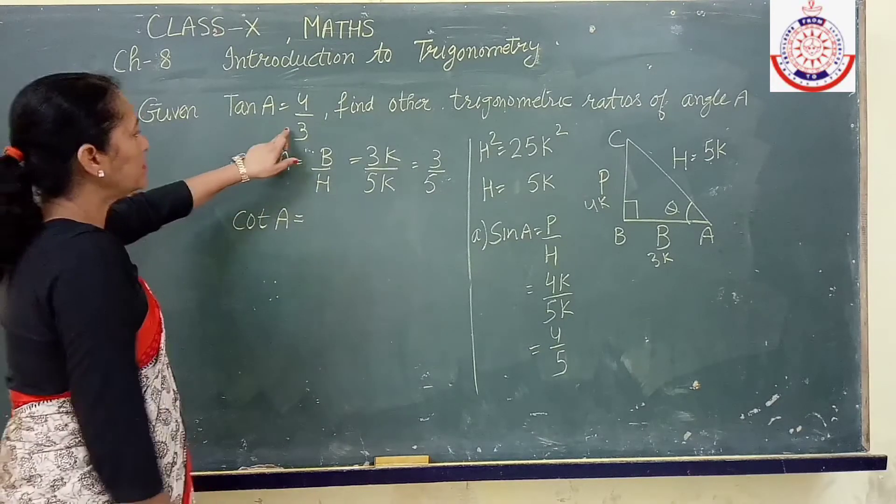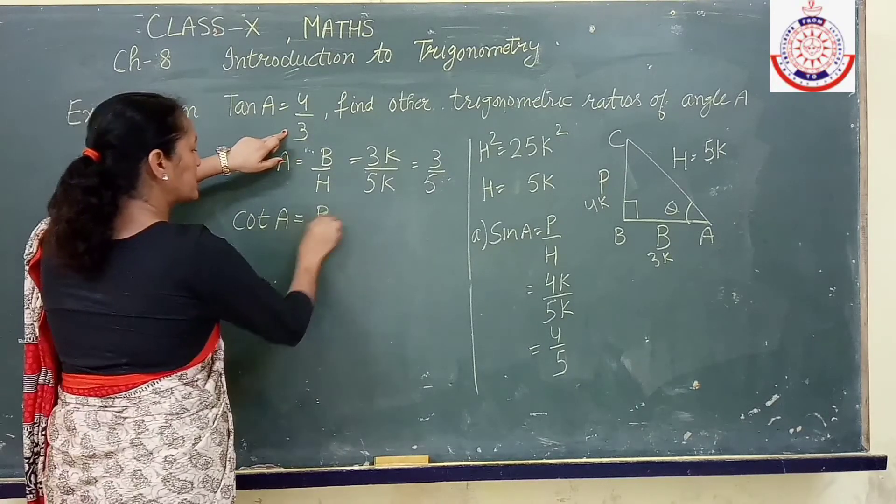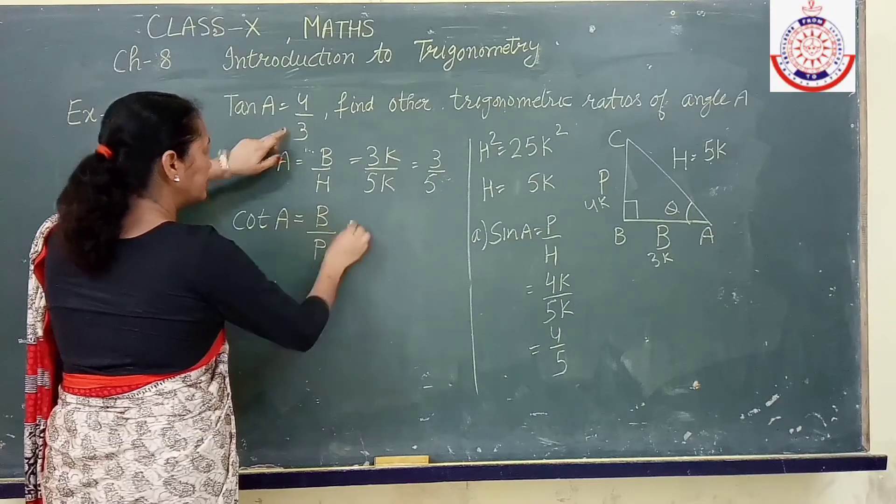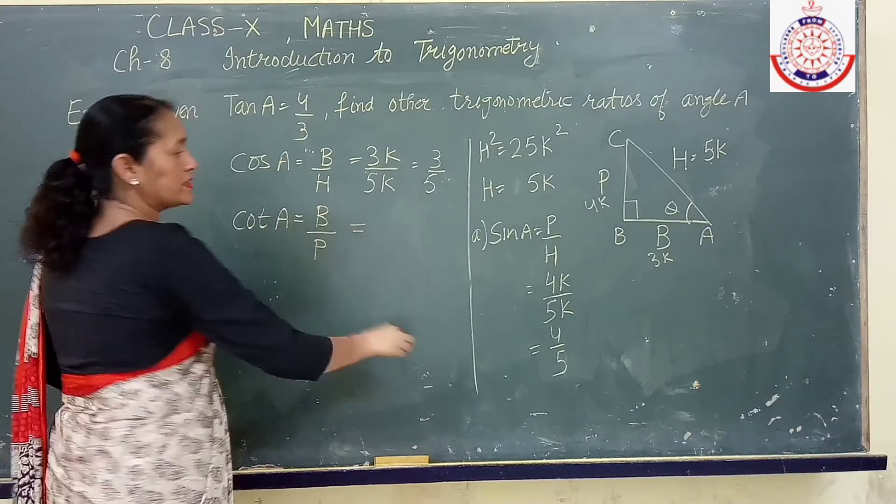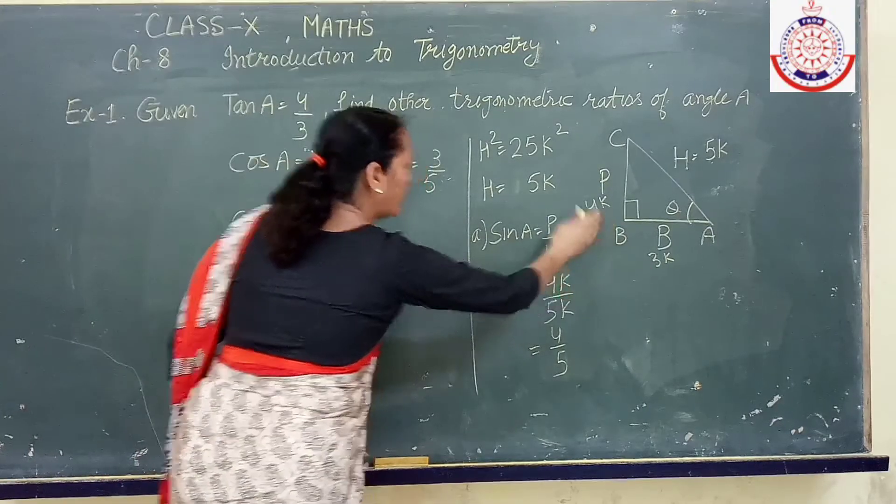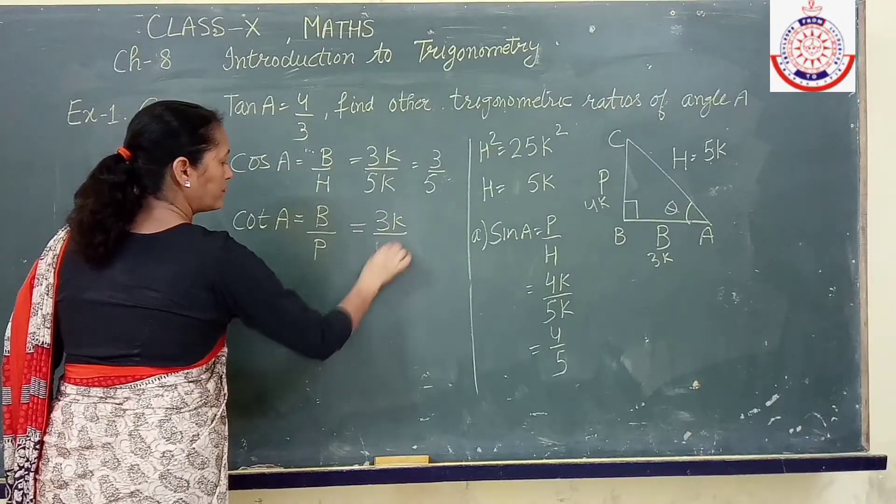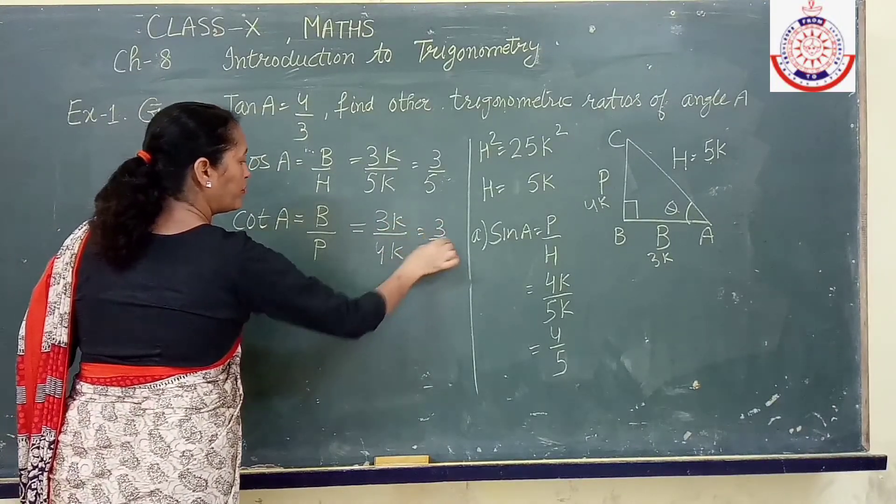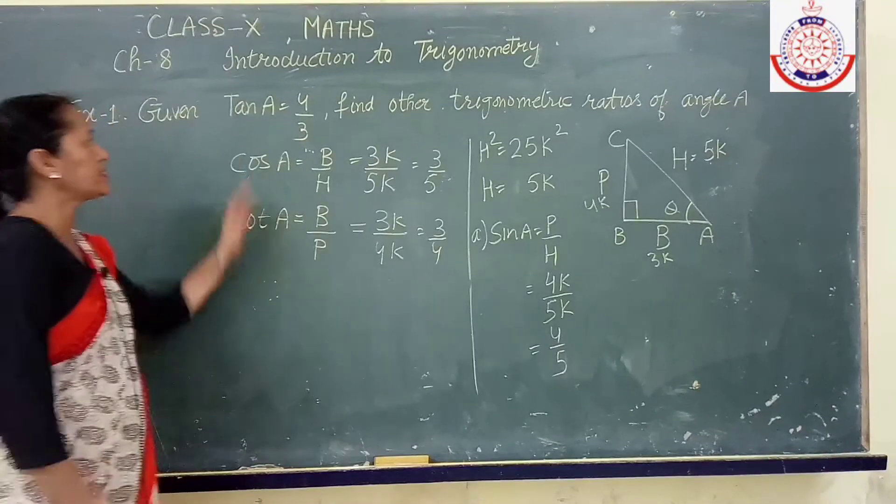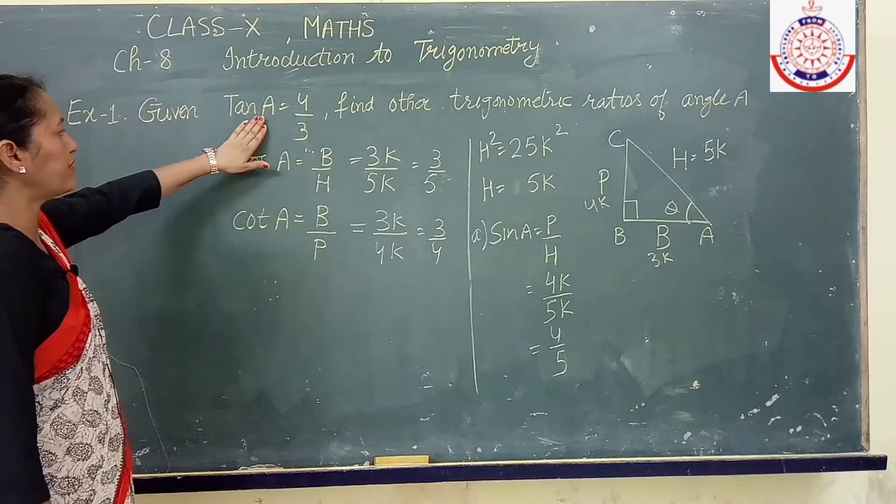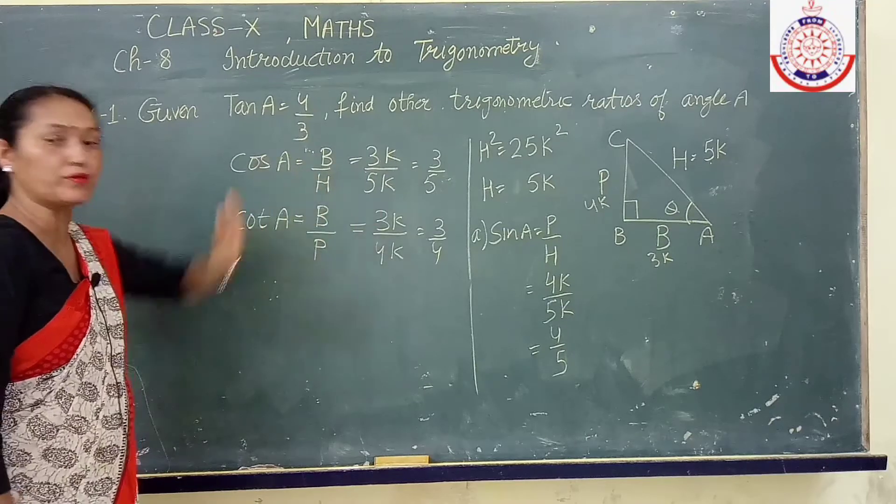Value of cot. Cot is either according to formula it is base upon perpendicular. That is 3k upon 4k, 3 upon 4. Or you can straight away say cot is reciprocal of tangent, so take value from here also.